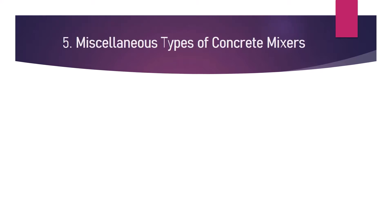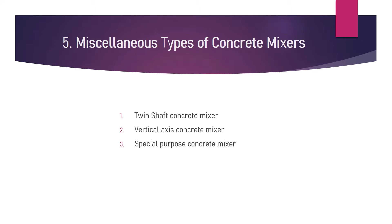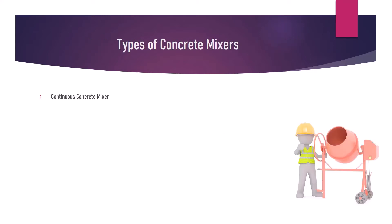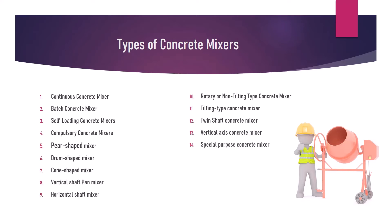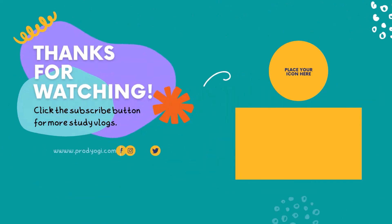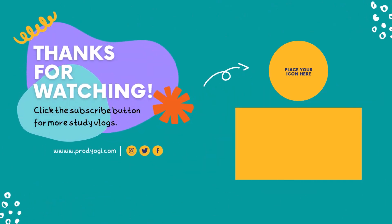In addition to those mentioned, there are miscellaneous types of concrete mixtures available in the market, including twin shaft concrete mixture, vertical axis concrete mixture, and special purpose concrete mixture. If you want to know about any of these in detail, please let us know in the comment section. For more informative videos related to construction and civil engineering, subscribe to Civil Engineering Fanatics.